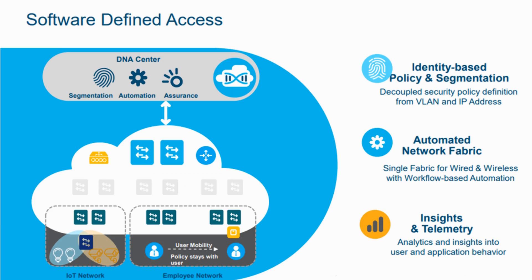Cisco SDA is an identity-based policy and segmentation solution. It provides segmentation at the user or group level. It is automating the entire network infrastructure as a fabric, including wireless and wired network automation. A single network fabric means from that single network, we can manage different campus, WAN, and cloud.